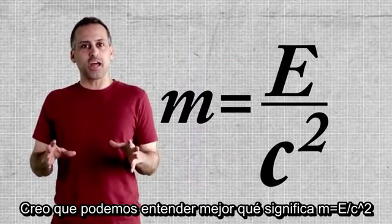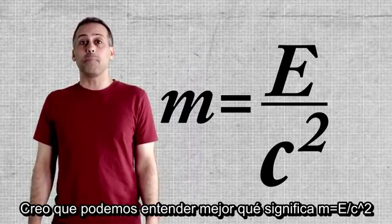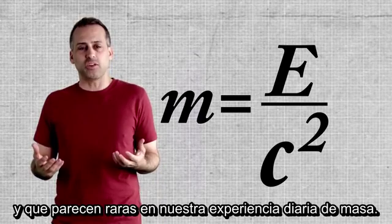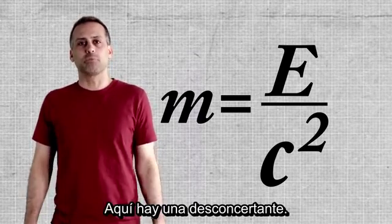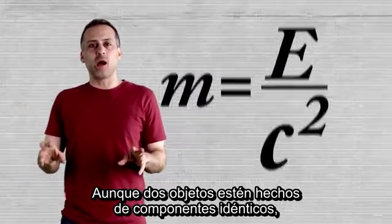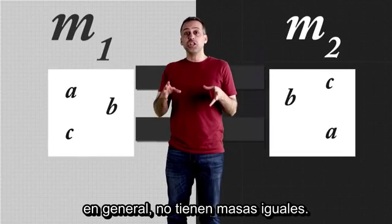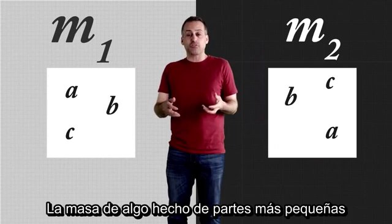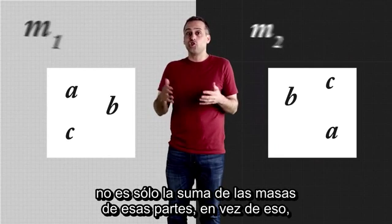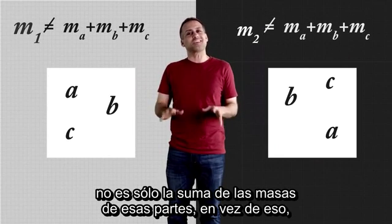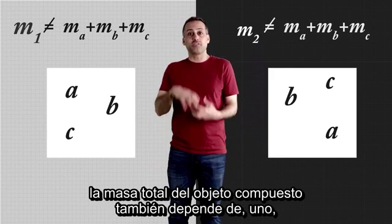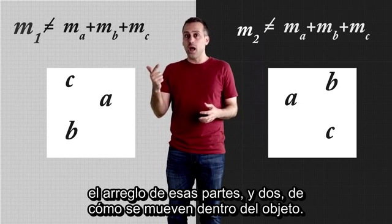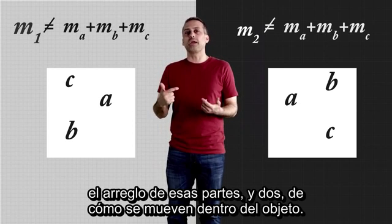We can get a better sense of what m equals e over c² means if we start with some things that it implies that seem at odds with our everyday experience of mass. Even if two objects are made up of identical constituents, those objects will not in general have equal masses. The total mass of a composite object also depends on, one, how its parts are arranged, and two, how those parts move within the bigger object.